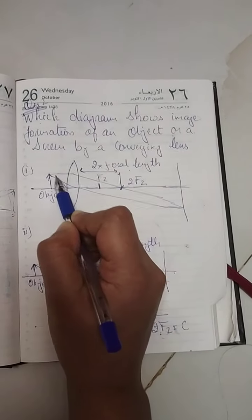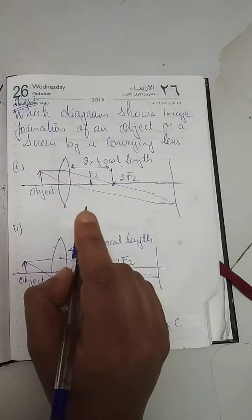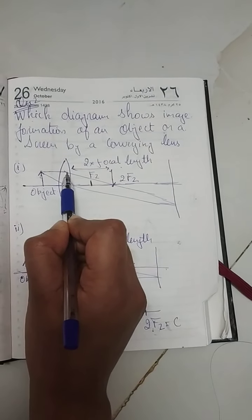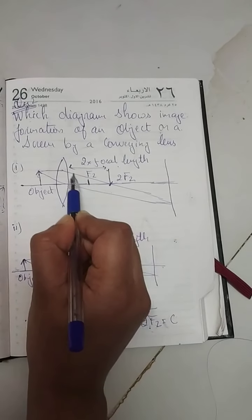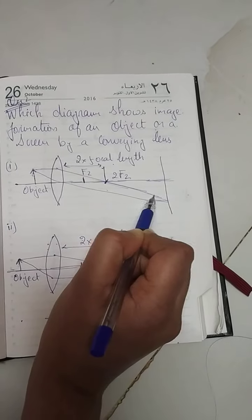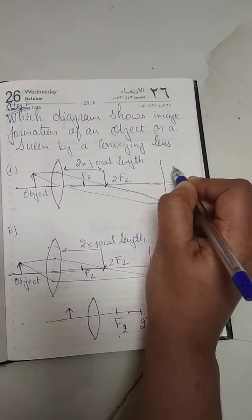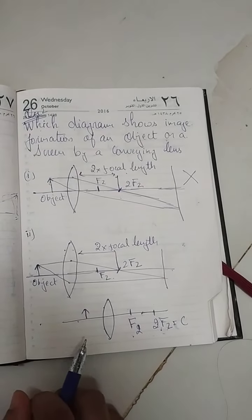If the line is parallel to the principal axis, after refraction it should pass from the focus. But here it's not passing from the focus - it's passing from the center of curvature. So this diagram is wrong.